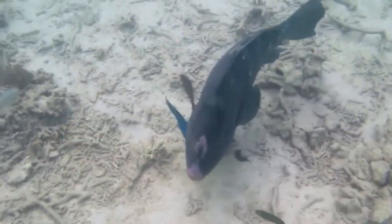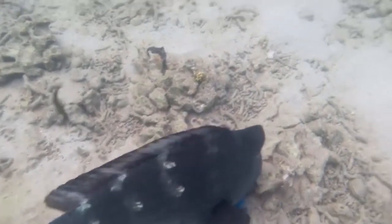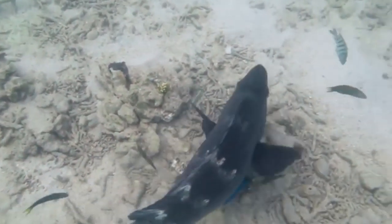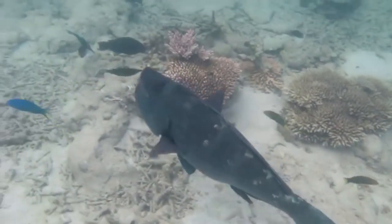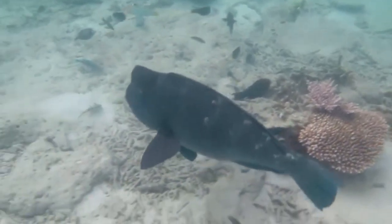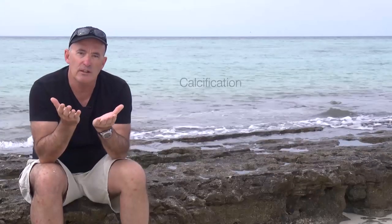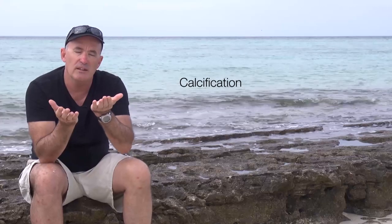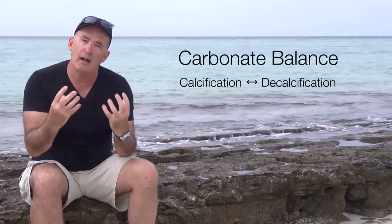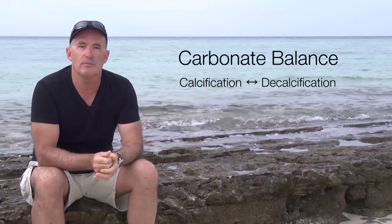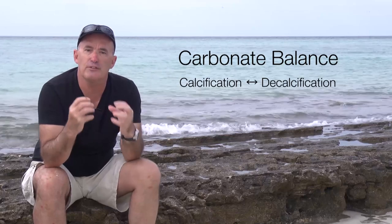On the other side of the equation are a range of processes which remove calcium carbonate from the reef framework. Eroding organisms and storms are two processes on coral reefs which remove large amounts of calcium carbonate. The balance between calcification on one hand and decalcification on the other is referred to as the carbonate balance of coral reefs, and this is the focus of today's lecture.